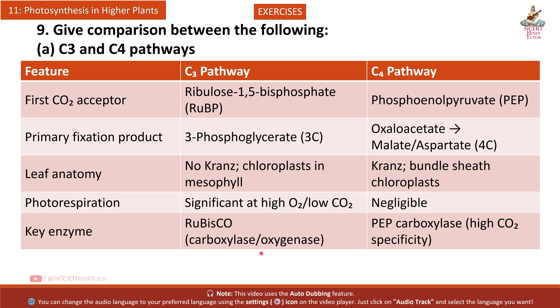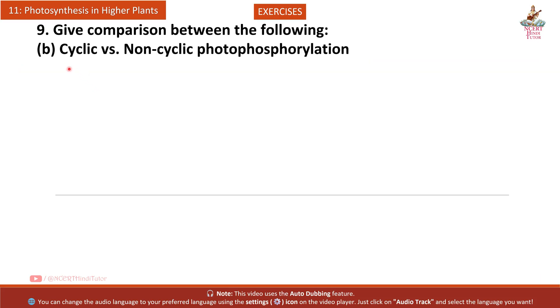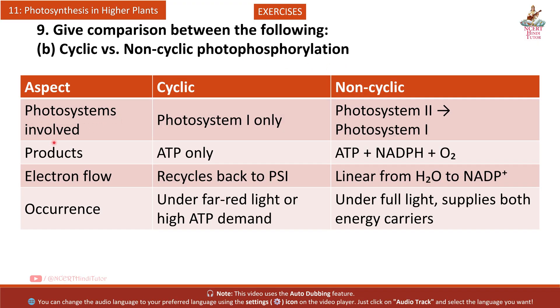Photorespiration - C3 pathway: Significant at high O2 low CO2; C4 pathway: Negligible. Key enzyme - C3 pathway: Rubisco carboxylase/oxygenase; C4 pathway: PEP carboxylase high CO2 specificity. B: Cyclic vs Non-Cyclic Photophosphorylation. Photosystems involved - Cyclic: Photosystem 1 only; Non-Cyclic: Photosystem 2 to Photosystem 1. Products - Cyclic: ATP only; Non-Cyclic: ATP plus NADPH plus O2.